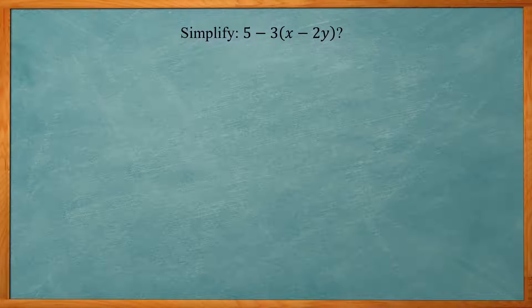And this one says simplify 5 minus 3 times quantity X minus 2Y. So the key to solving this one is to distribute this negative three in front of the parenthesis.